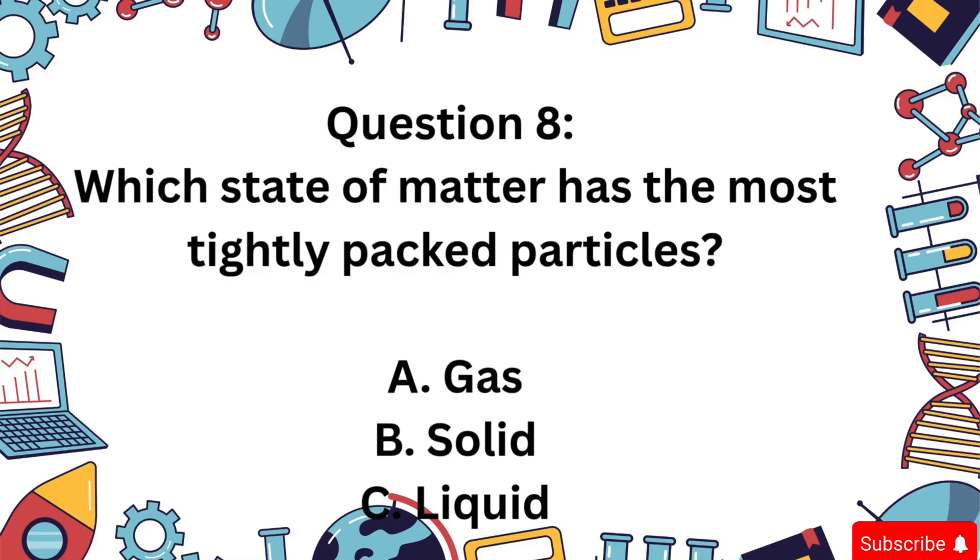Question 8: Which state of matter has the most tightly packed particles? Is it A) Gas, B) Solid, or C) Liquid? The correct answer is B. In solids, particles are packed closely together, which gives them their shape.